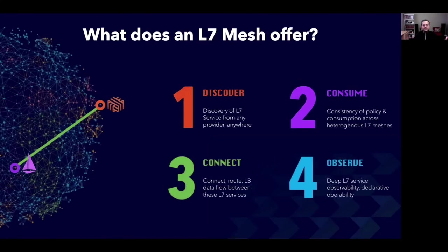Since most people are familiar with layer seven service meshes, let's use those as an example. The monolith that used to be the app with APIs that were probably internal library calls is now a modern app where the distributed components are services with application-level RPCs, GRPCs, or other HTTPS-based calls. In this situation, most layer seven meshes that we all know and love allow for discoverability of these app-level or layer seven service endpoints, consistency of policy and consumption. Most layer seven meshes do a great job of layer seven data flow connectivity, especially within their own domains. And most are on par when it comes to observability and declarative management.